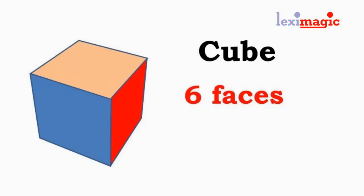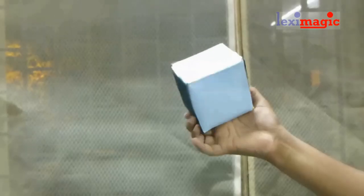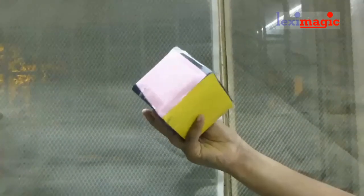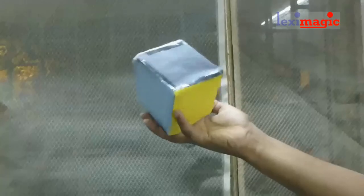Then we come to the cube which has six square faces and twelve edges and eight vertices.